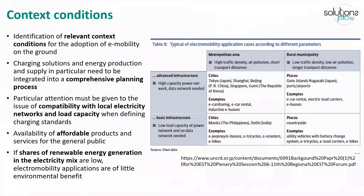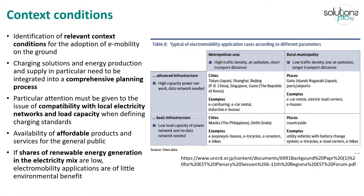In conclusion, it is always essential to consider the context conditions to make informed decisions on e-mobility and on the implementation of new services. To do so, a comprehensive planning approach should be followed, ensuring the correct integration with other aspects of urban systems. This includes things like electric networks and their load capacity when defining, for example, charging standards for the vehicles.